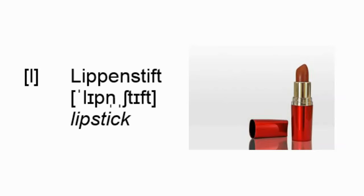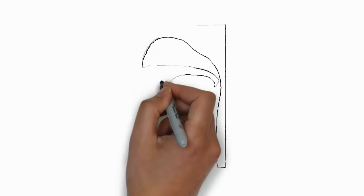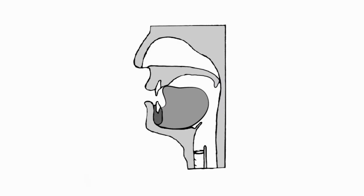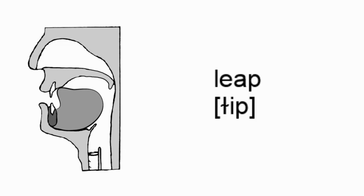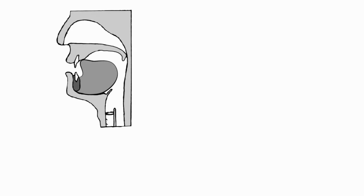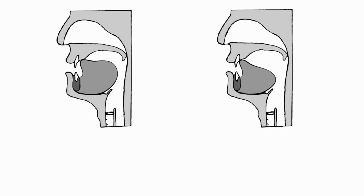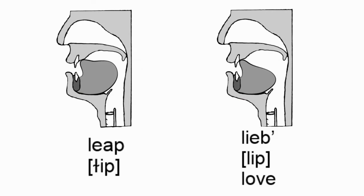German's L sounds a bit different from English. In English, when we say a word like 'leap,' the back and front of your tongue both come up towards the roof of your mouth — 'leap.' But in German, only the tip of your tongue will come up, and it reaches just behind your front upper teeth — 'leap.'